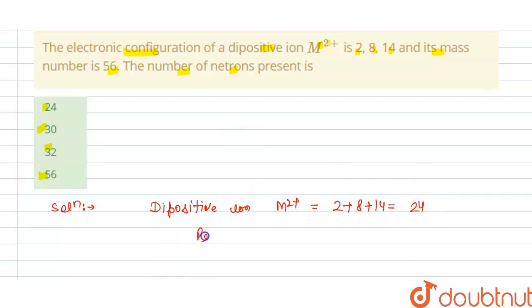From this we get the number of protons. Number of protons equals number of electrons equals 24 plus 2, that is 26.